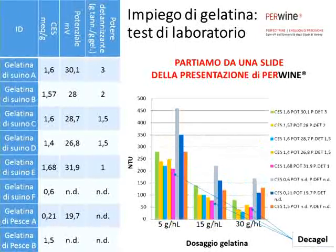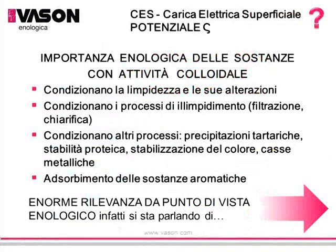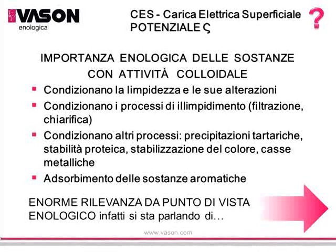In this slide, we're referring to gelatin and the selection here is made using a single parameter which is essential in this type of mechanism, which is the surface electrical charge. This charge correlates with the substances that are present in musts and wines that we use, and that is very important in adjuvants.